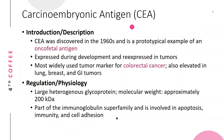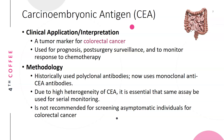CEA, or carcinoembryonic antigen, was discovered in the 1960s and is a prototypical example of an oncofetal antigen. It is expressed during development and re-expressed in tumors, similar to AFP. It is the most widely used tumor marker for colorectal cancer, and is also elevated in lung, breast, and GI tumors. CEA is a large heterogeneous glycoprotein with a molecular weight of approximately 200 kD, part of the immunoglobulin superfamily, involved in apoptosis, immunity, and cell adhesion.